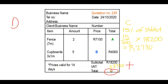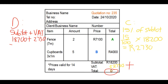For D, the total amount, you simply add the subtotal and the VAT. Our subtotal was eighteen thousand two hundred and the VAT was two thousand seven hundred and thirty. Adding those together gives us twenty thousand nine hundred and thirty rand.